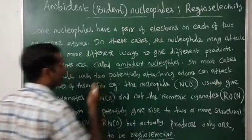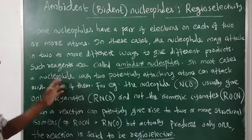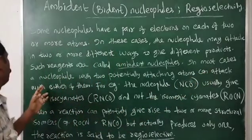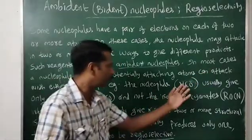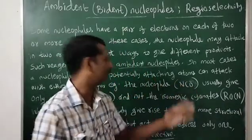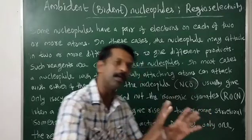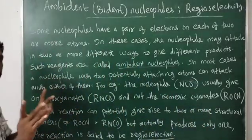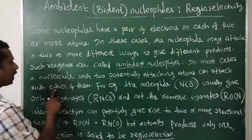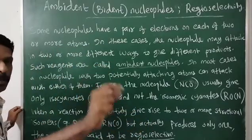In most cases, a nucleophile with two potentially attacking atoms can attack with either of them. Even though there are two different attacking sites — for example in NCO⁻, nitrogen can attack the substrate molecule as well as oxygen — even though both sites can attack, usually only one site is used.